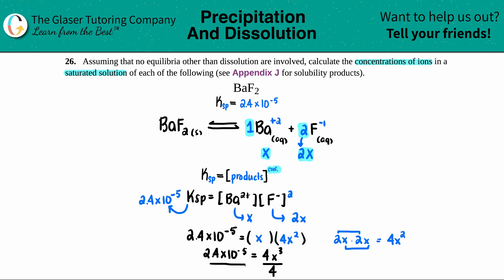Divide by 4. That's the first step. So now 2.4 times 10 to the negative fifth divided by 4 is 6 times 10 to the negative sixth. And this equals X cubed.